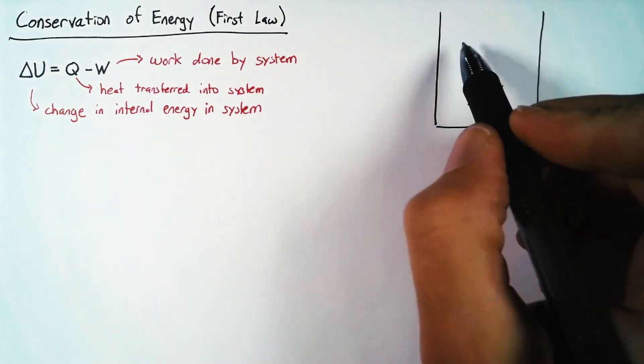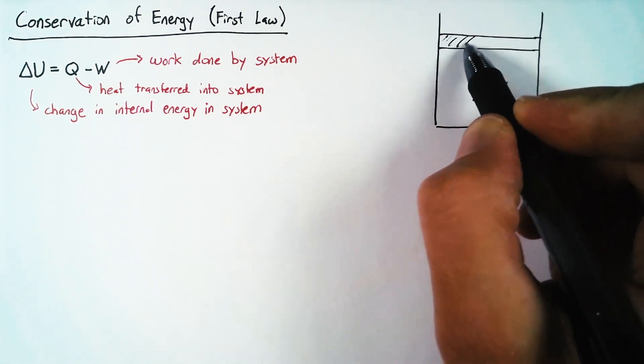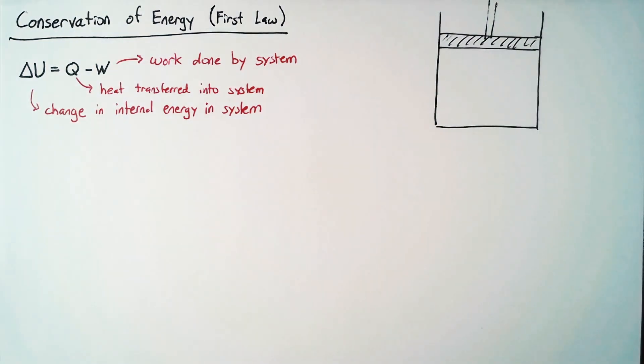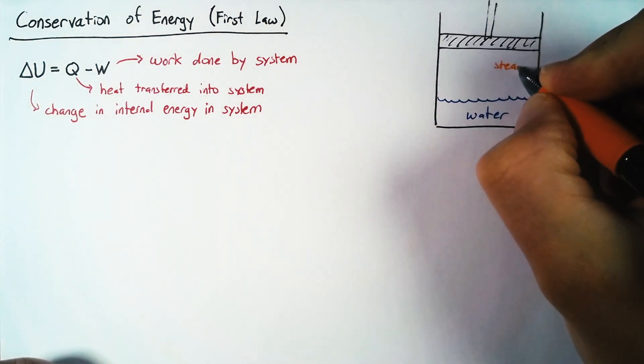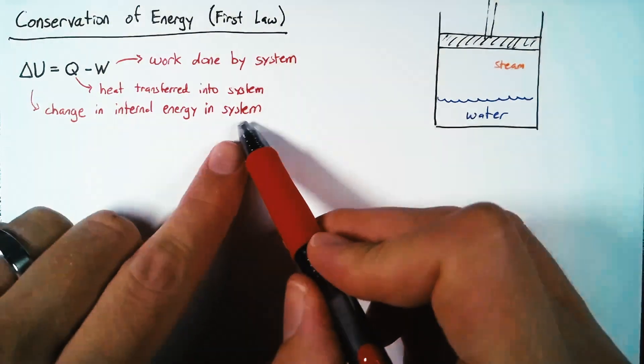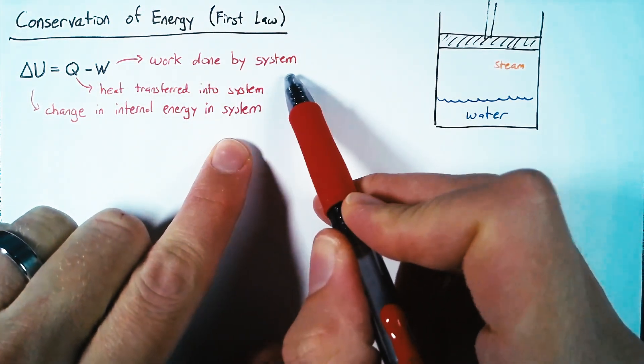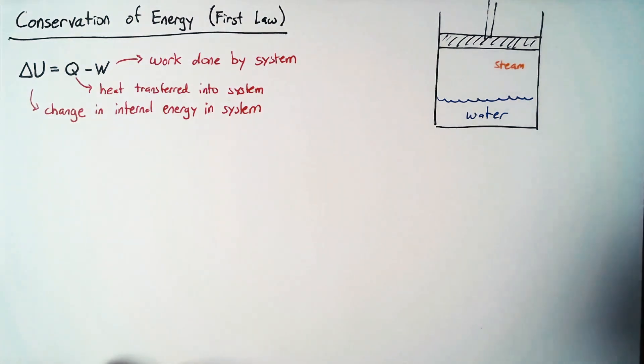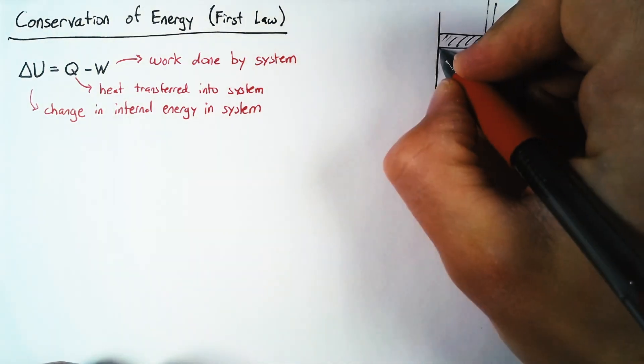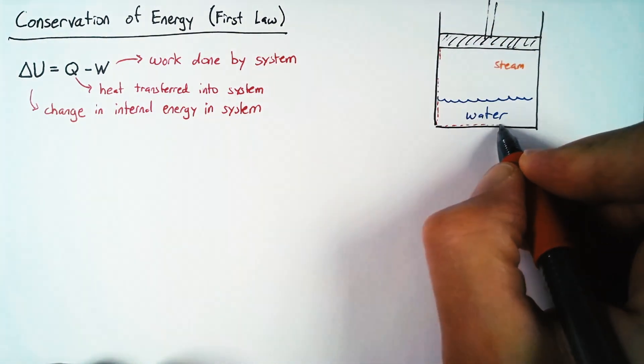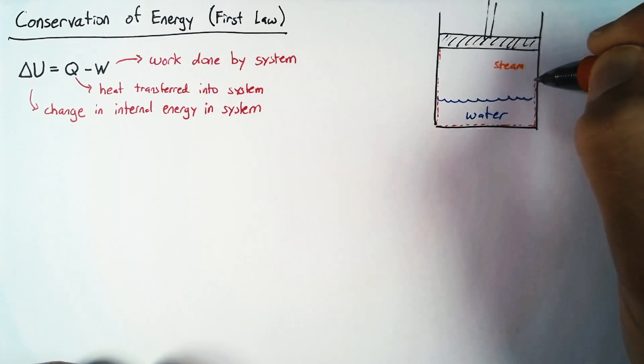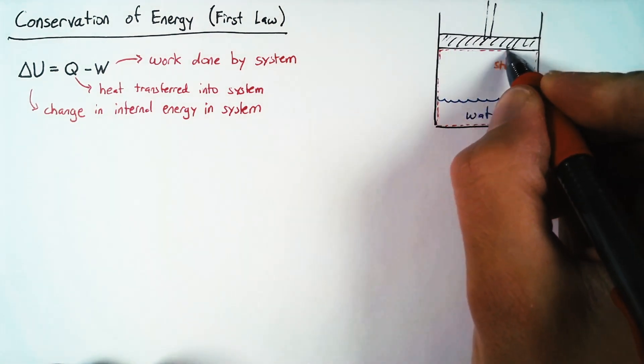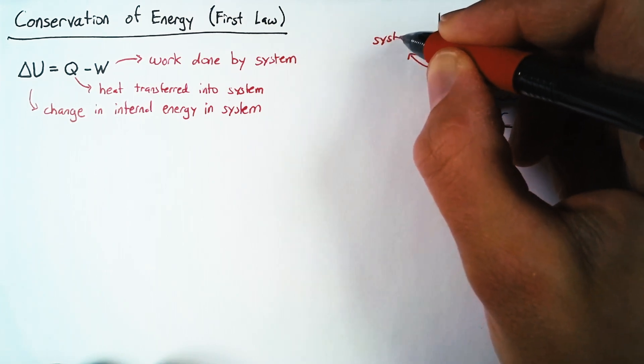Now, our example for this problem is going to be a piston, which is inside a cylinder. And also inside this cylinder, we're going to have a mixture of steam and water. So when I'm talking about this word system, we can define our system to be whatever we want. But there's usually a pretty clear choice that makes our analysis easier. In this case, our system is going to be defined by all of this volume that is beneath our piston, which is going to contain that steam and water.